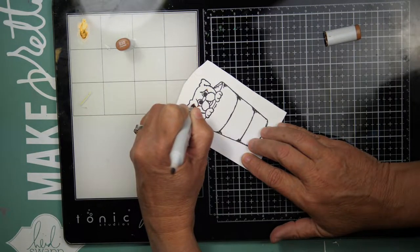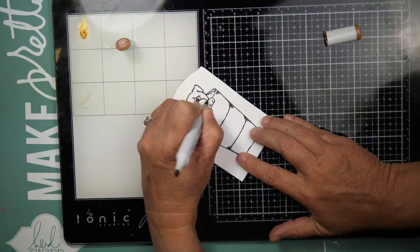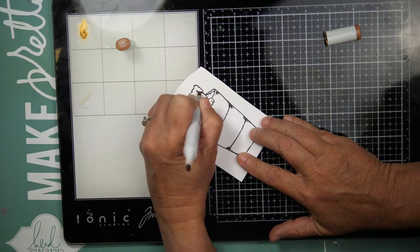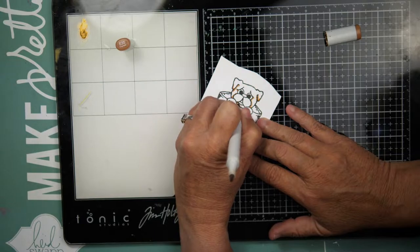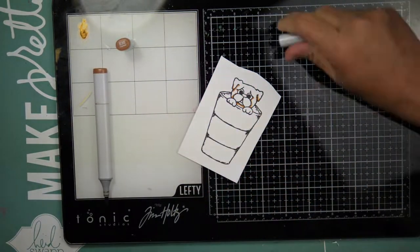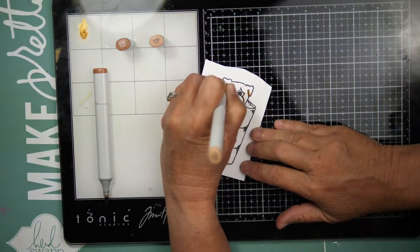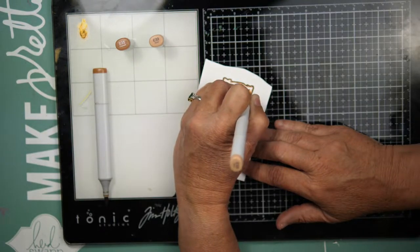I am going to color my little puppy with some E markers. I am starting with my darkest color, which will be E35. I will then go in with E33, a little E31, and I will leave some white space.